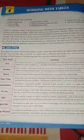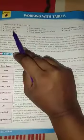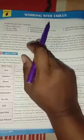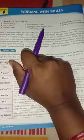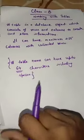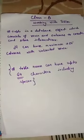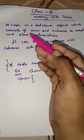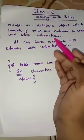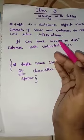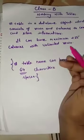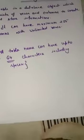Good morning class, welcome back to your computer class. Today we are going to start chapter 3, which is working with tables. In this chapter, we will talk about what is a table, components of a table, and how we can create a table in MS Access. First, we should know what is a table. A table is a database object which consists of rows and columns to create and store information. It can have a maximum of 255 columns with unlimited rows.